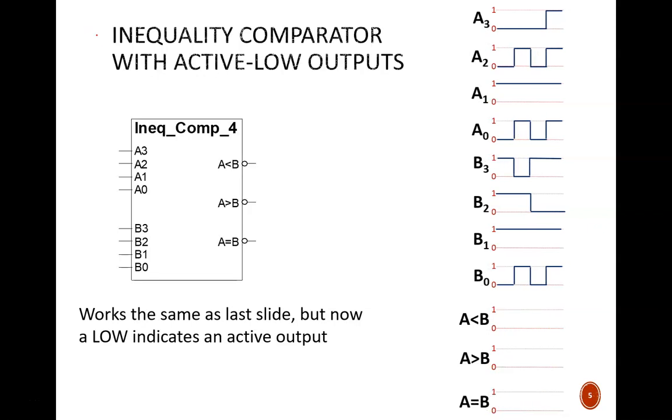The next device looks exactly the same except for these little bubbles on the output ports. As a result, the function of the circuit is the same, but now the outputs are active low. So if A and B happen to be equal, then the A equals B port will output 0, and the other inactive ports output 1. With this in mind, try to complete the timing diagram.